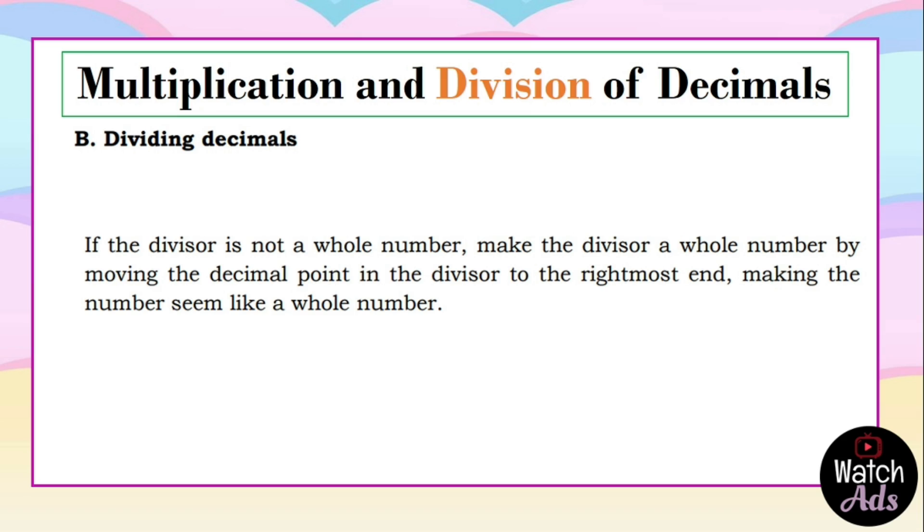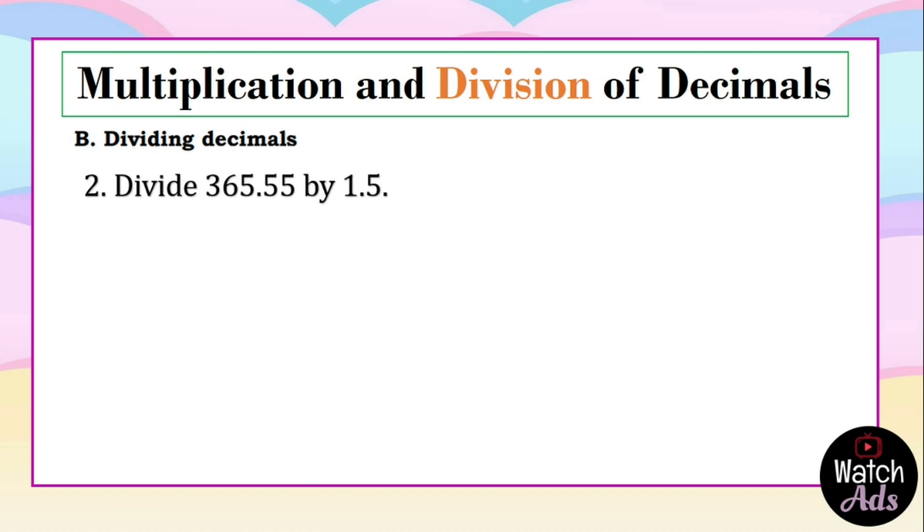Another thing is if the divisor is not a whole number, then we make the divisor a whole number by moving the decimal point in the divisor to the rightmost and making the number seem like a whole number. Let's have an example. Divide 365.55 by 1.5. But remember, the divisor should be a whole number. Since there is 1 decimal place in our divisor, we should also move 1 decimal place in our dividend, giving us brand new numbers: 3655.5 divided by 15.